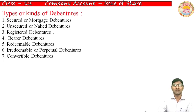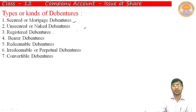Next, let us discuss the types or kinds of debentures. There are seven types of debentures. The first is secured debenture. As the name suggests, secured debentures are those which are secured by the property or assets of the business.